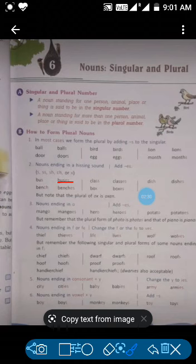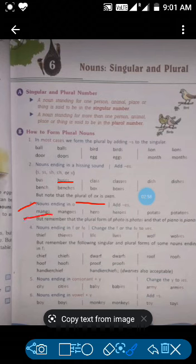But there is an exceptional rule here. Rule number three: which nouns ending in O, we can add ES. For example, mango becomes mangoes, hero becomes heroes.